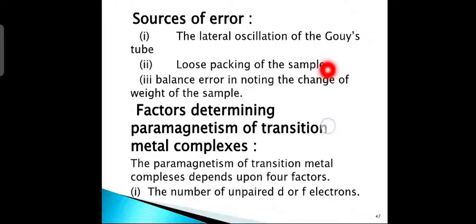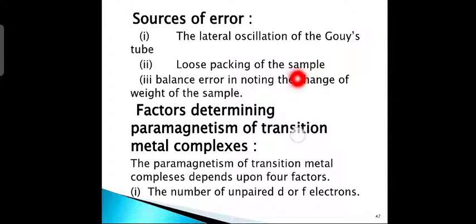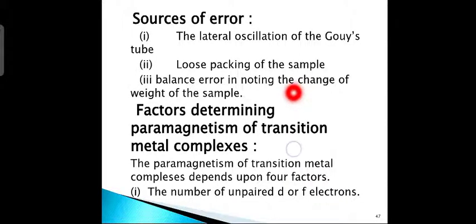Sources of error: first, the lateral oscillation of the Guise tube containing the sample may cause error in weighing — therefore, the apparatus must be kept in an oscillation-free environment. Second, loose packing of the sample leads to error in the volume of the sample. Third, there can be balance error in noting the change of weight of the sample.